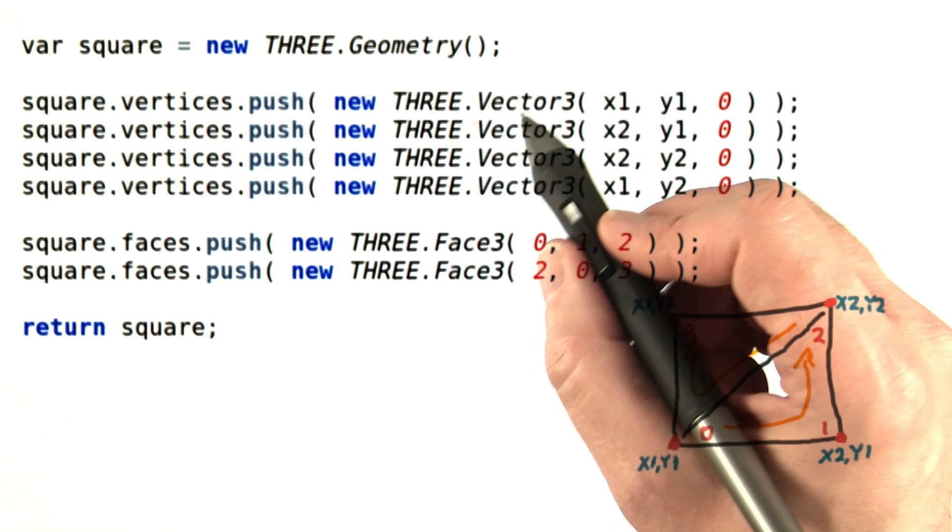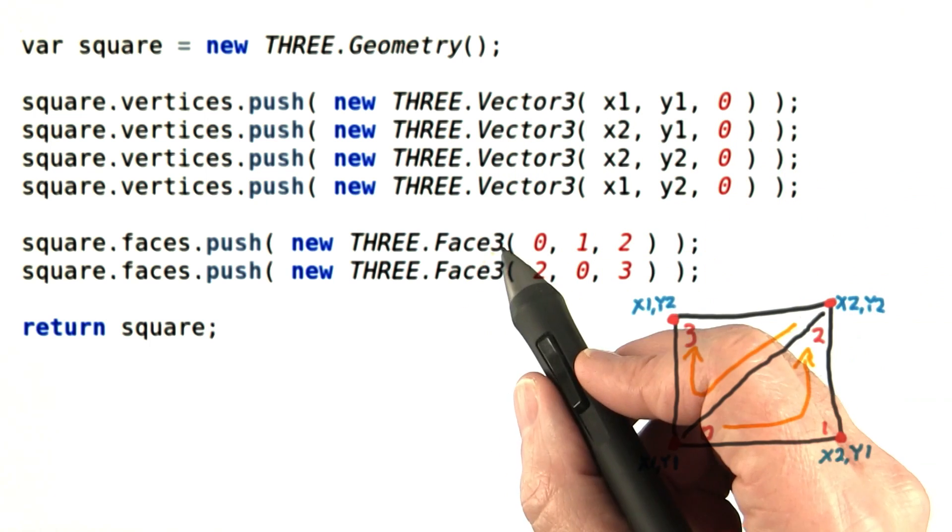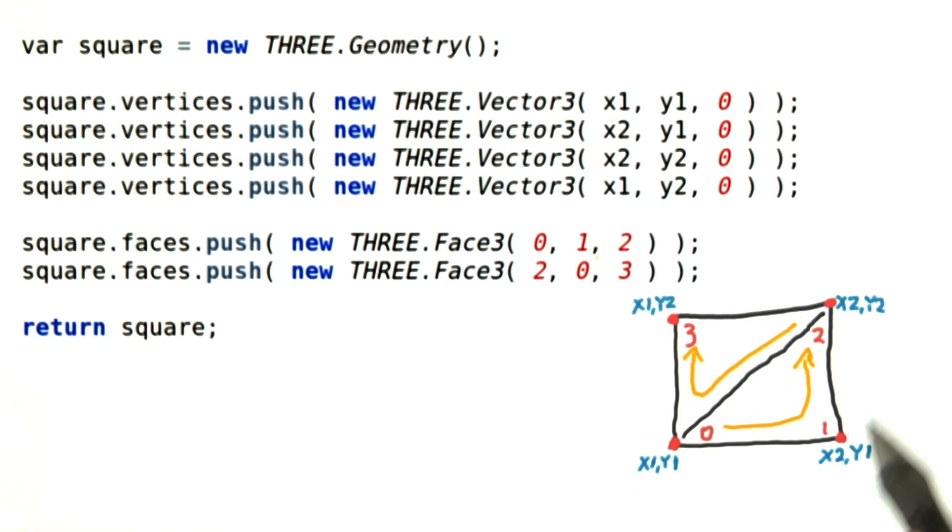A more compact and efficient way to draw the square is to define the four vertices needed, and then define two triangle faces reusing these points. So for example here, we're reusing these points 0 and 2 for this first triangle and for this second triangle.